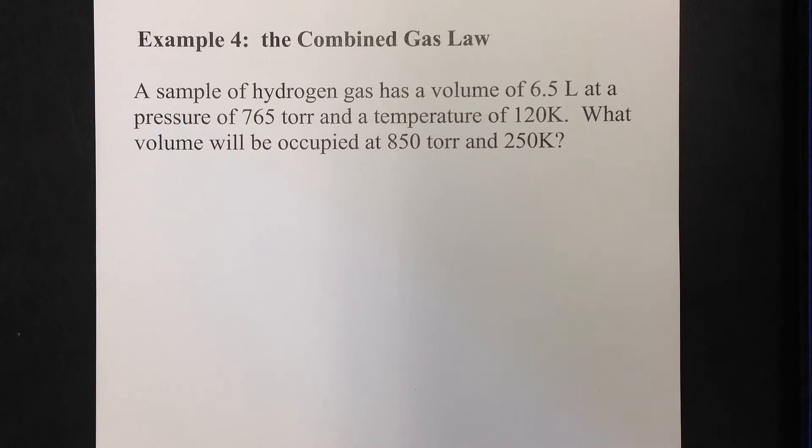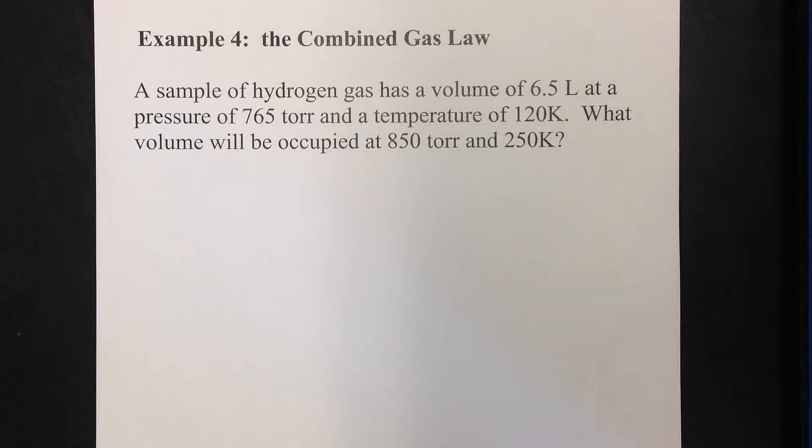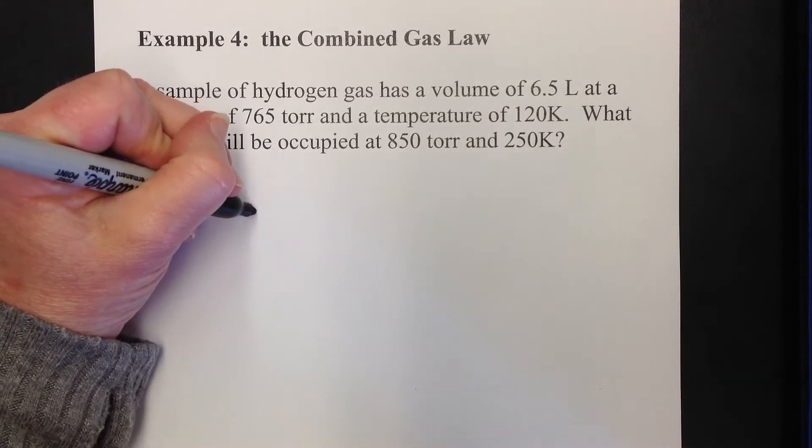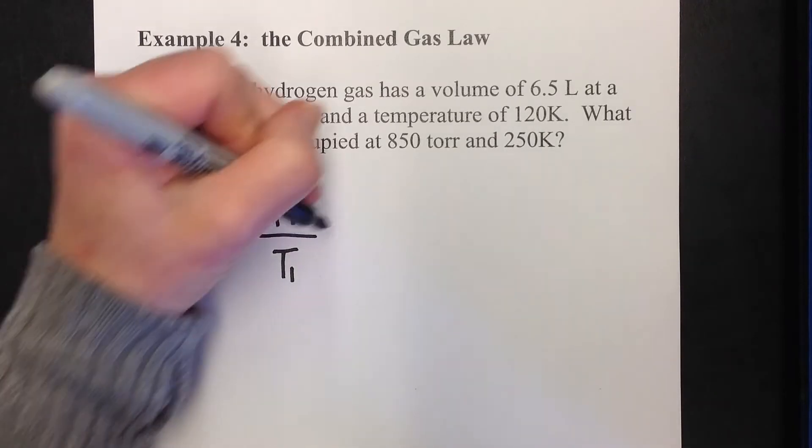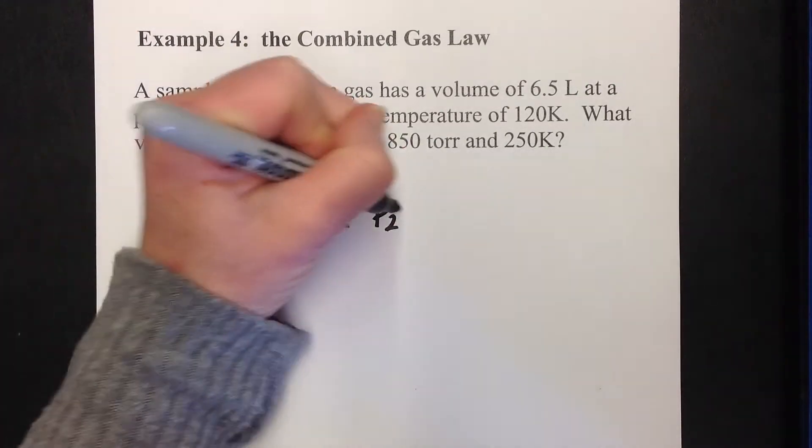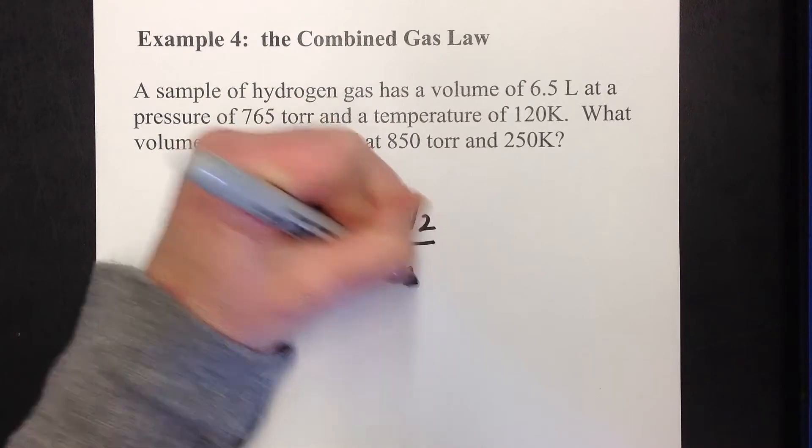First, I'm going to talk to you about what the combined gas law looks like. If you'll remember from Boyle's, Charles, and Gay-Lussac, anytime we have dealt with pressure or volume, they are always on the top, meaning the top of the fraction. Anytime temperature has been involved, it's always been on the bottom. Our ones are always on the left, and our twos have always been on the right. We can take all three of those equations and combine them into one big thing called the combined gas law, and that is P1V1 over T1 equals P2V2 over T2.